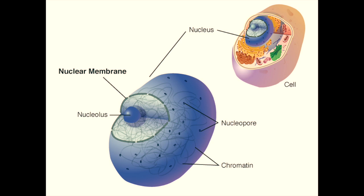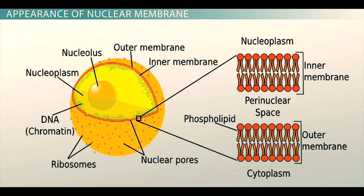This genetic material needs to be protected, and it's protected by the nuclear membrane, which is a double membrane that encloses all the nuclear genetic material and all the other components of the nucleus. There are some small holes or pores in the nuclear membrane that allow the messenger RNA and proteins to move between the nucleus and the cytoplasm.